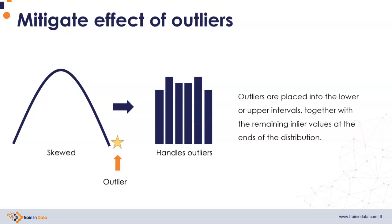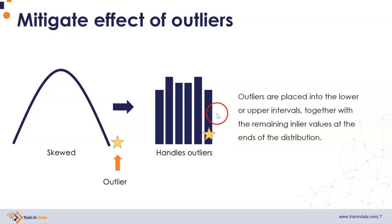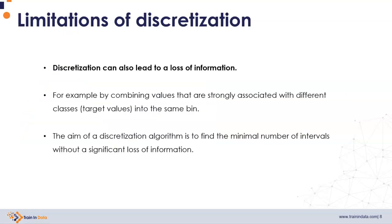Discretization also mitigates the effect of outliers, because if we have values that are much bigger or much smaller than the majority of the distribution, they will be naturally allocated to the extreme intervals, and therefore that value is no longer different from the rest of the bigger or smaller values of the distribution.